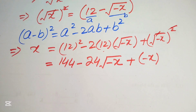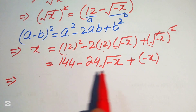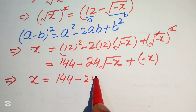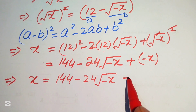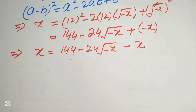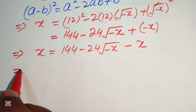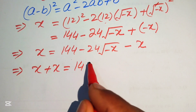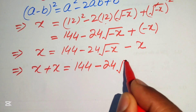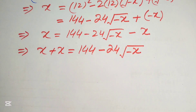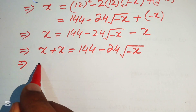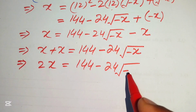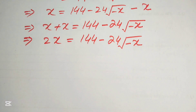Further simplification: the plus and minus signs give us x equals 144 minus 24 times square root of minus x, with the minus x term remaining. Moving minus x to the left hand side, it becomes positive, so x plus x equals 144 minus 24 times square root of minus x. Therefore 2x equals 144 minus 24 times square root of minus x.